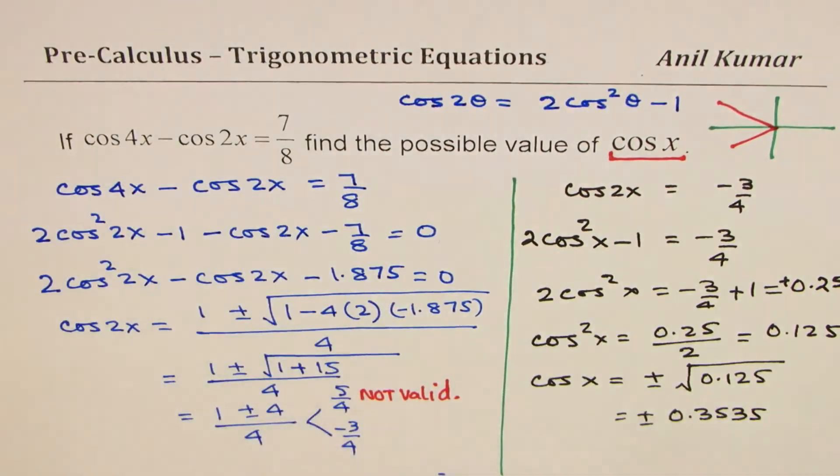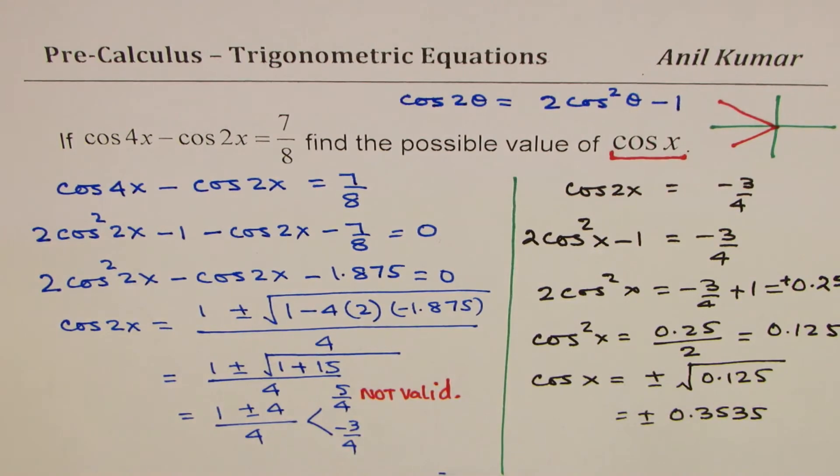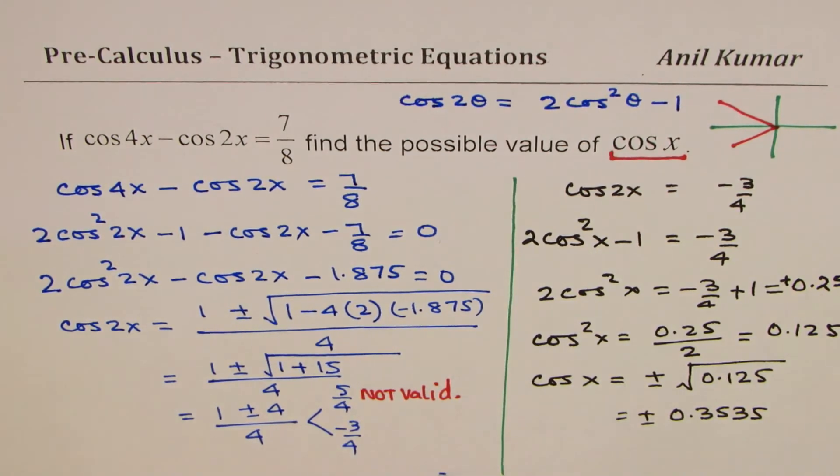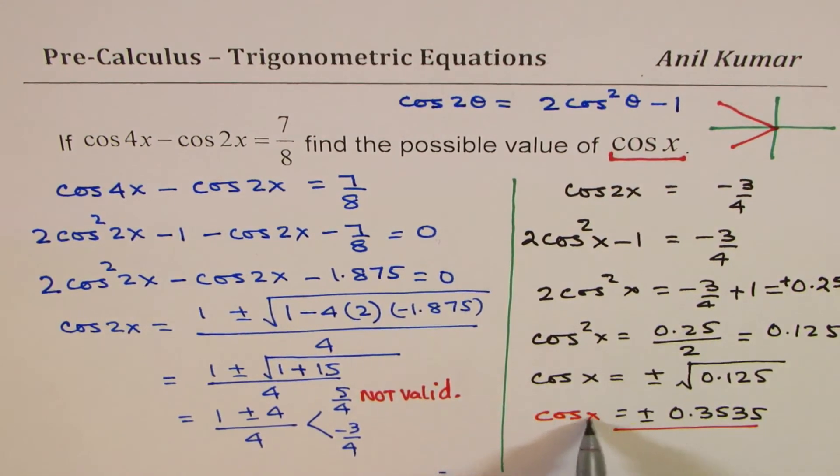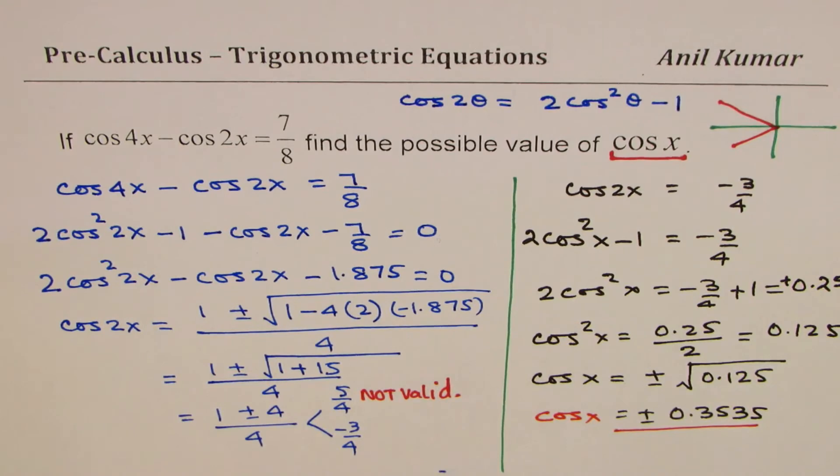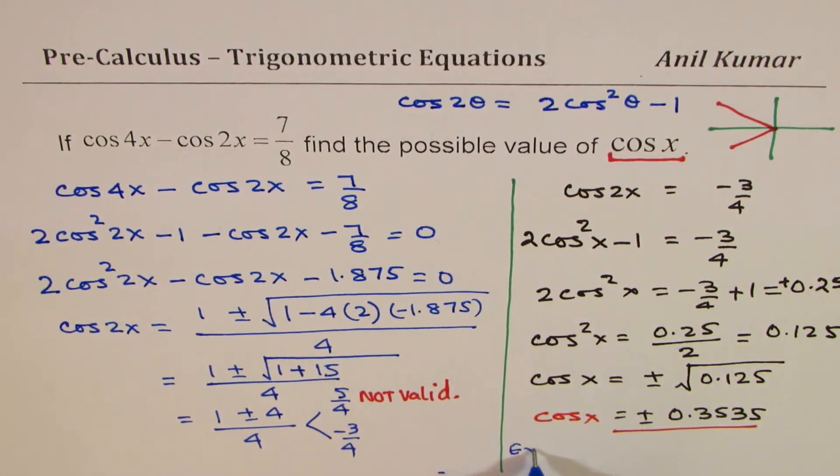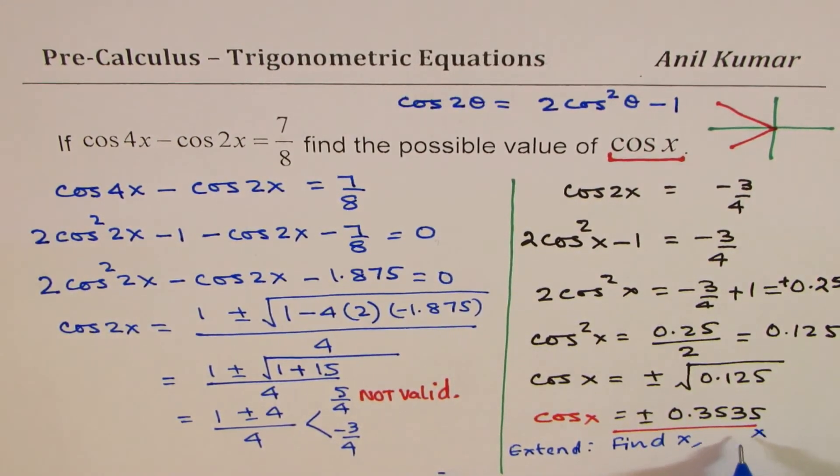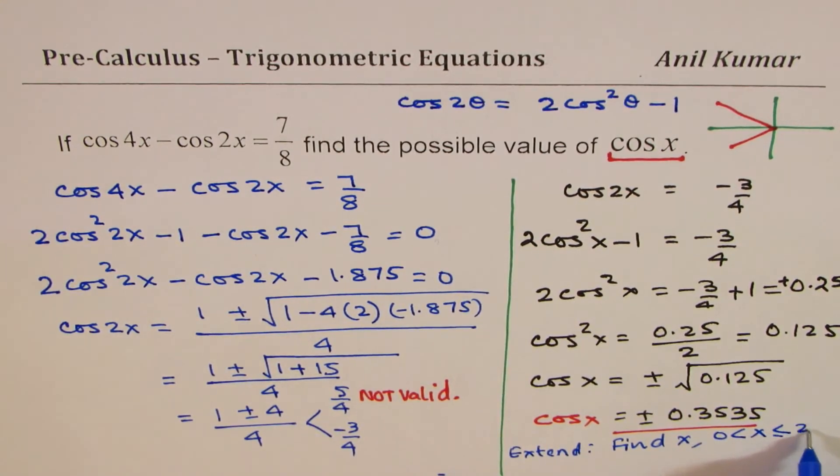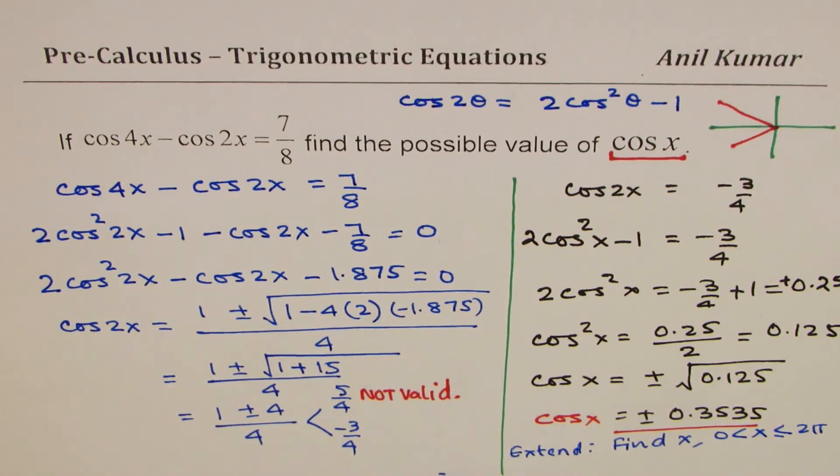That becomes the solution for the given equation in terms of cos x. We don't really have to find the angle, so we say cos x equals this. Now, you can always extend this equation to find x, where x is between 0 to 2π. That could be extended.